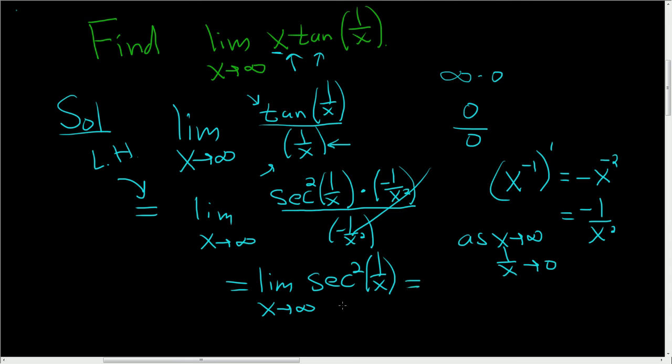So this term approaches the secant squared of 0. Secant is 1 over cosine. Cosine of 0 is 1. So this will just be 1. And that's it.